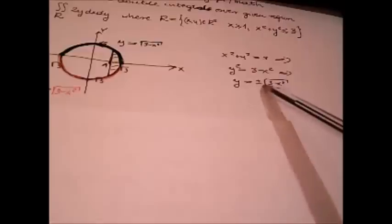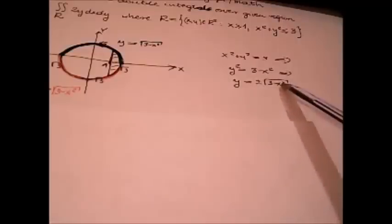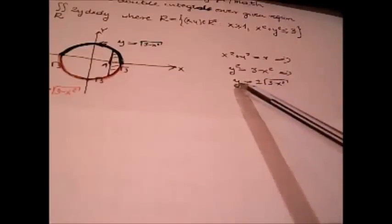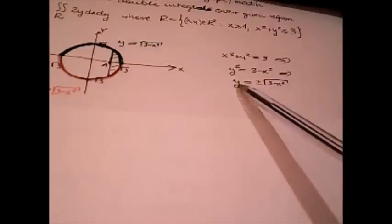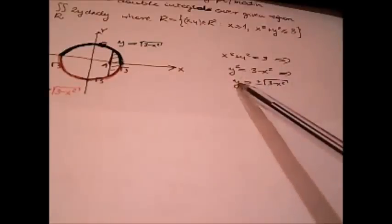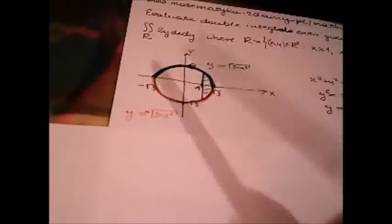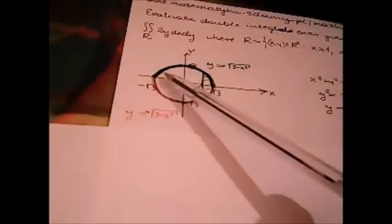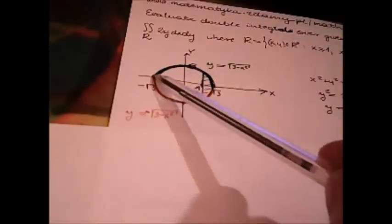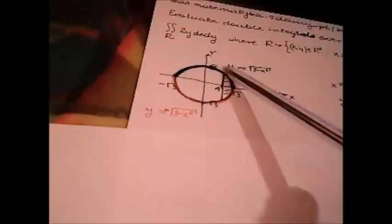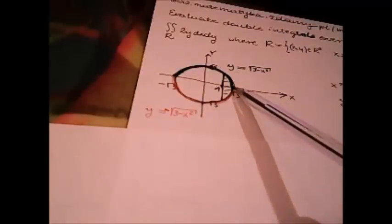When we have plus the square root of 3 minus x squared, we have y non-negative. Semicircle where y is non-negative is semicircle above the x-axis. This is green.